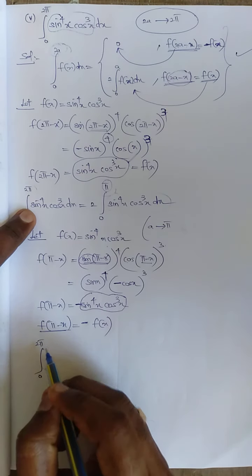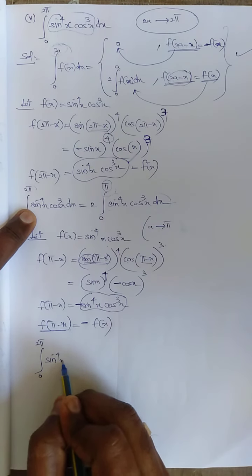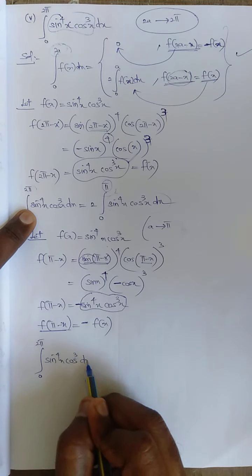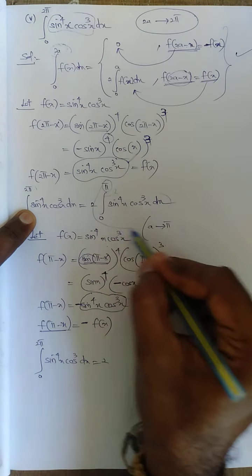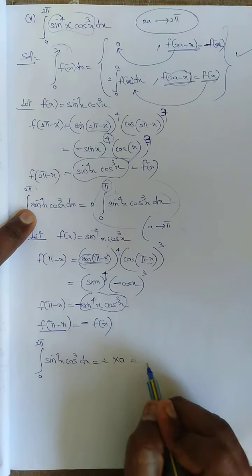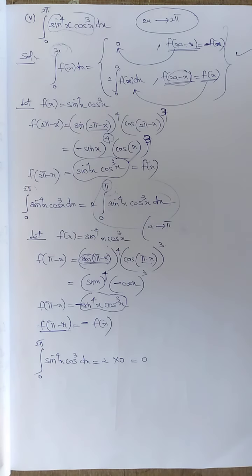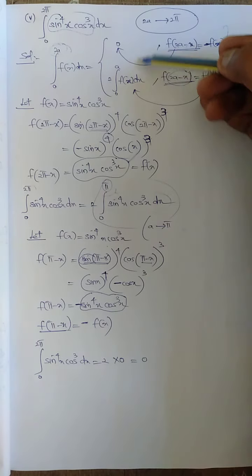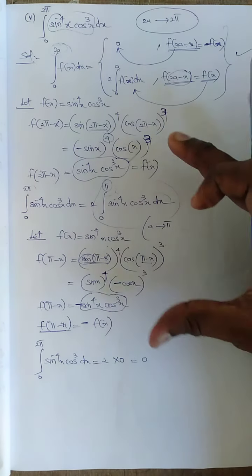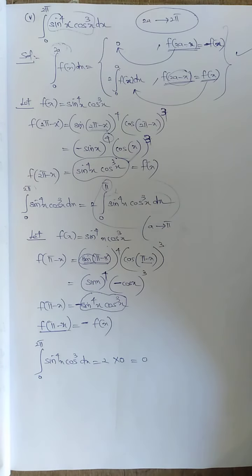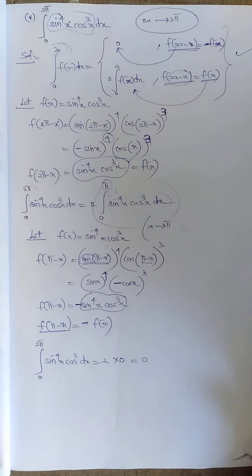So ∫₀²π sin⁴x · cos³x dx = 2 × 0 = 0. We finish the sum using these two properties. The property is a must — if you do not know the property, you cannot solve any such sums. Read the property carefully and know how to apply it. Thank you.